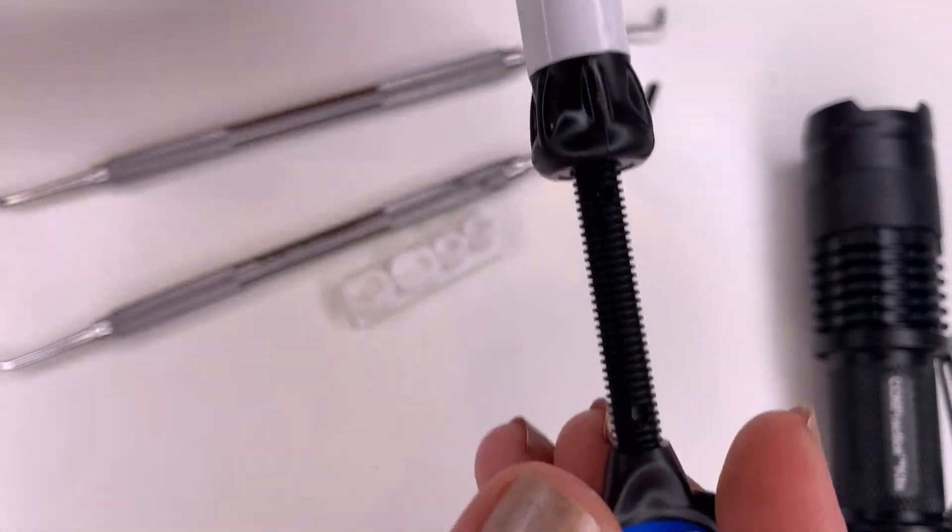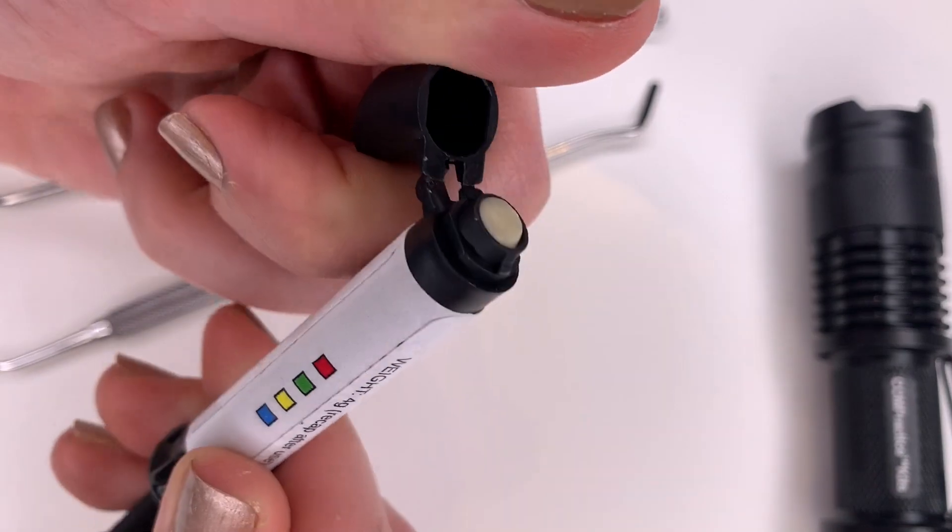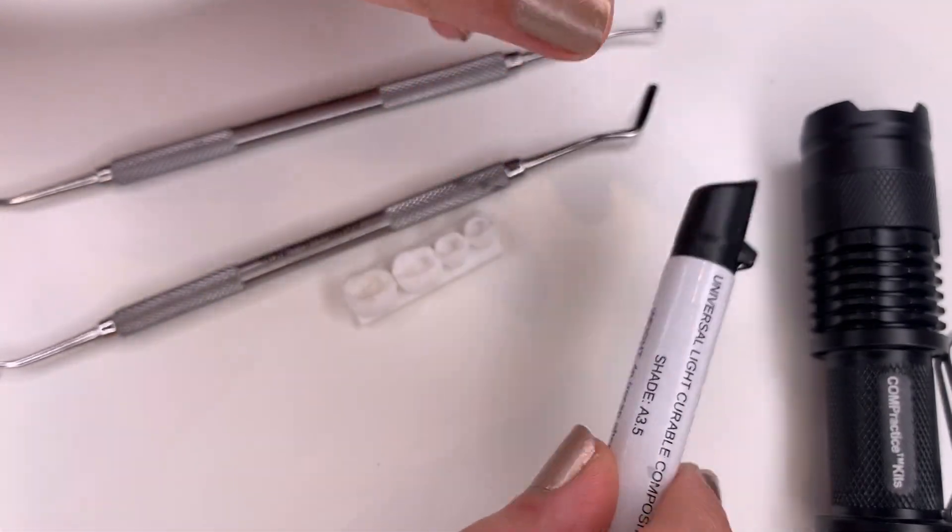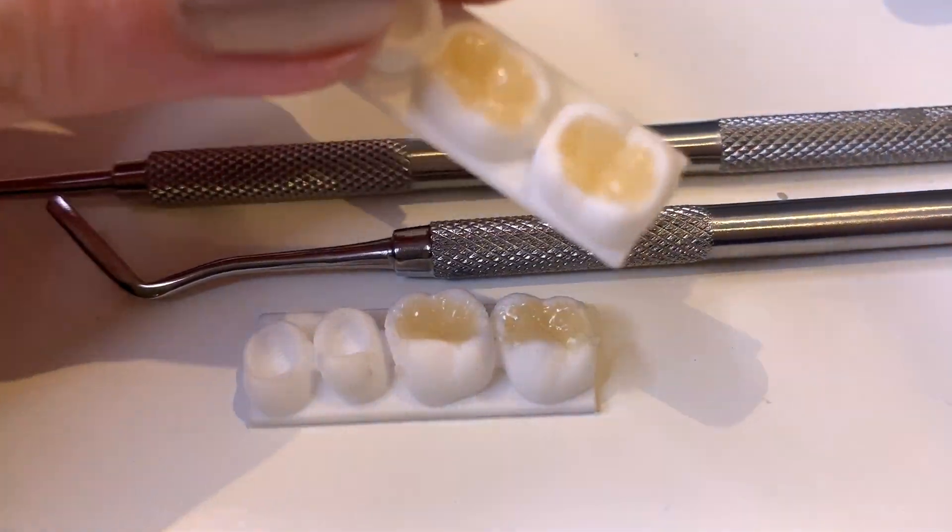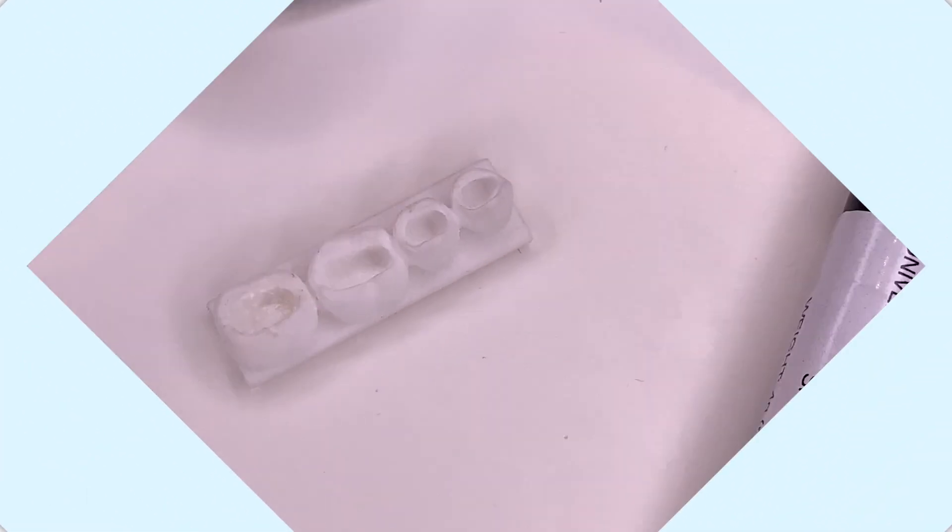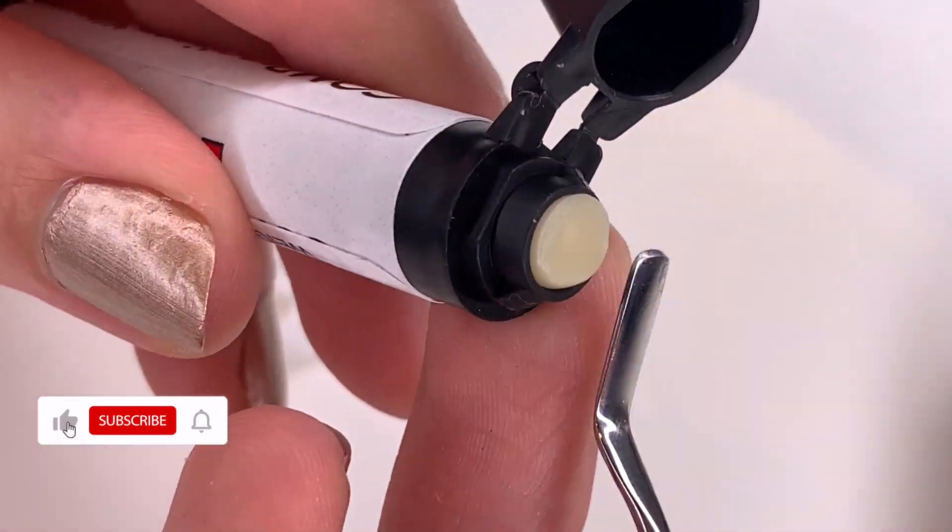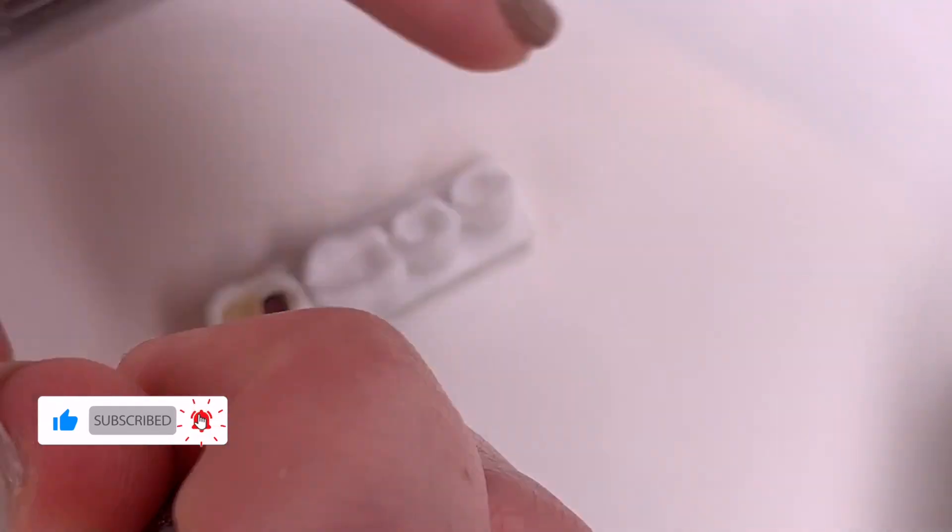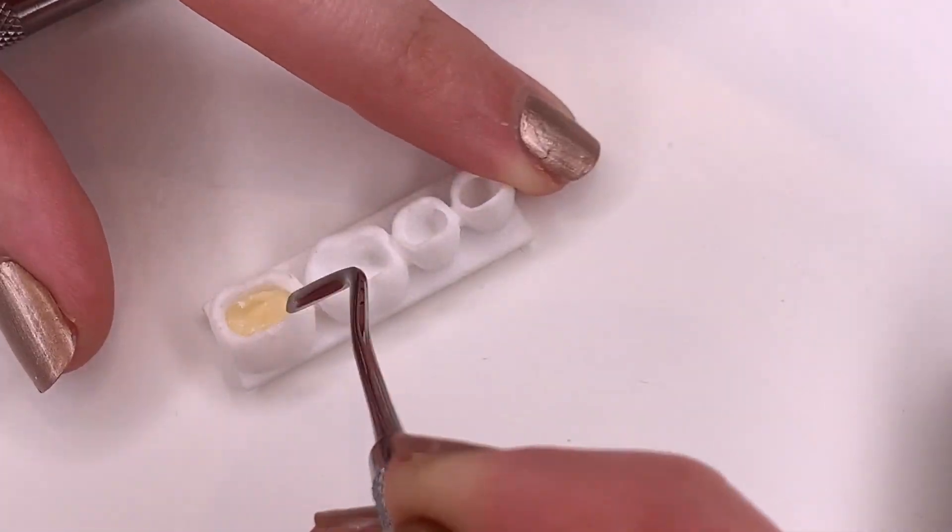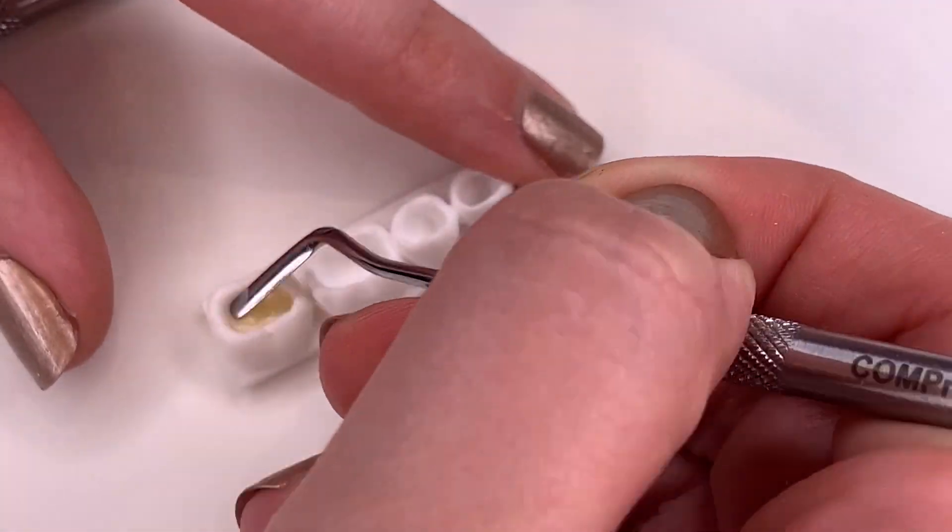With composite you're meant to place and cure it in two millimeter increments. This is so that the light can penetrate to the deepest layers and cure it. The first tooth I practiced on was a lower molar and I did the incremental composite layering as you can see, curing each step.